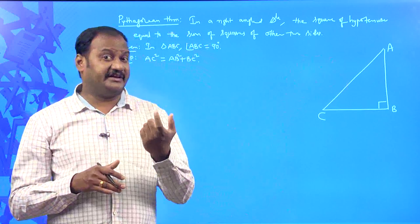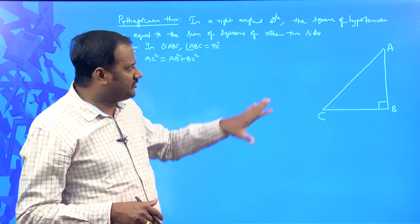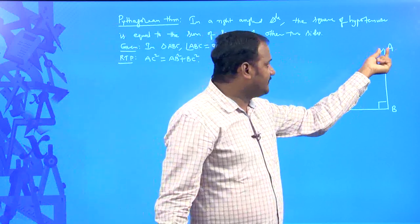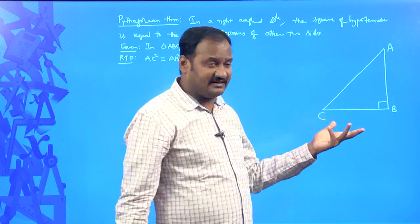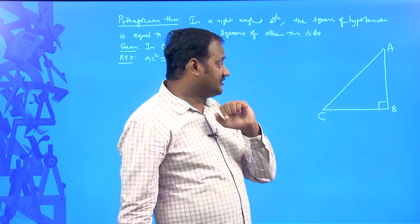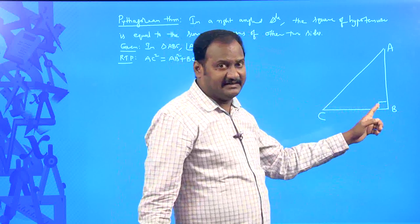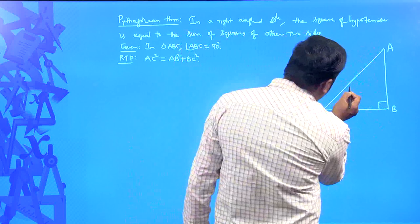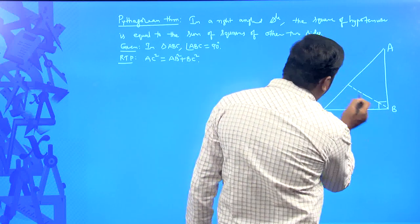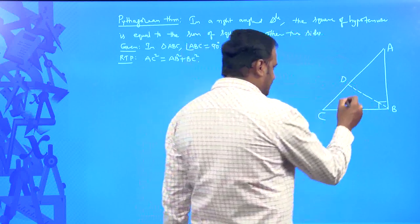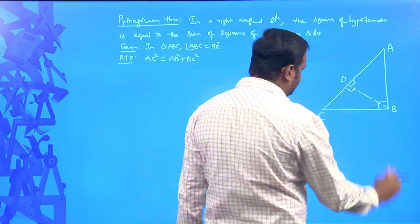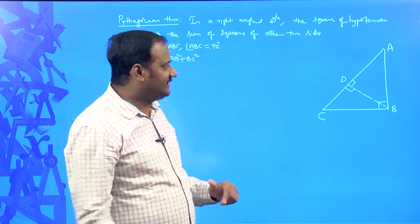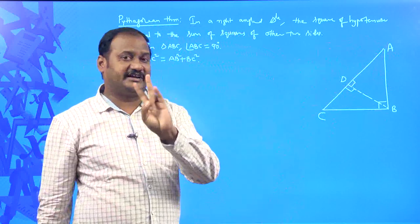And what is that construction? We need one right angle triangle to compare with this one. How do you draw a right angle triangle in this? Is it possible to draw any perpendicular from A? It is not, because AB is already the perpendicular from A. From C, CB is already perpendicular. So, it is observed that you can draw a perpendicular from B onto the side AC. When you draw a perpendicular from B onto AC — let BD be the perpendicular drawn on AC — this angle is 90 degrees and this angle is also 90 degrees. This perpendicular divides the right angle triangle into two different right angle triangles.